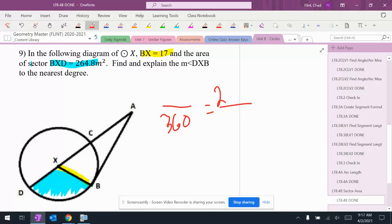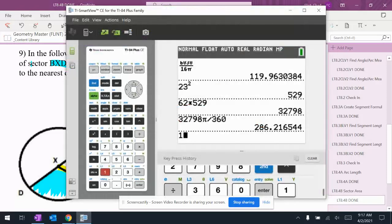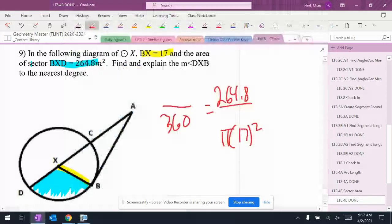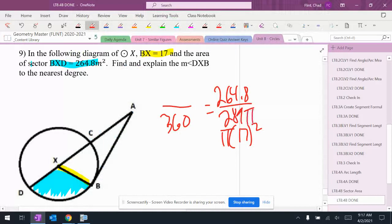This time I know the area of that piece is 264.8, and I can find the area of the whole thing. It's pi times 17 squared. 17 squared is 289, yes 289, so it's 289 pi.